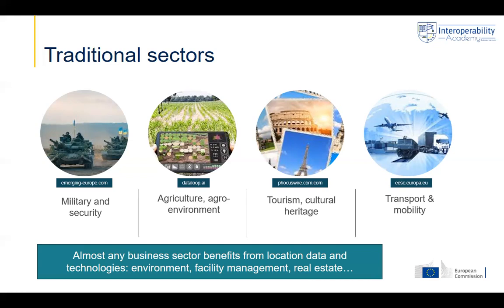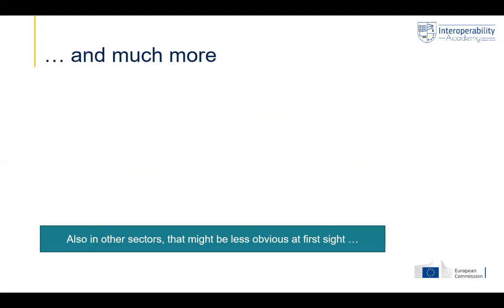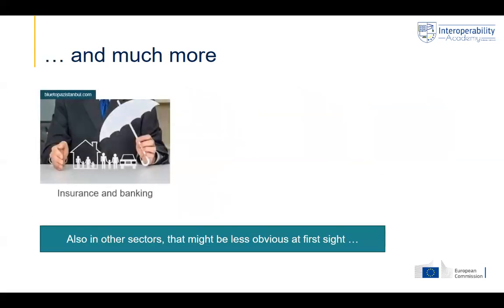These are typical traditional sectors. Real estate and facility management are other sectors where location data and technologies are used. But there are other sectors where it is used more recently or less intensely. Insurance and banking, for example — they might use it for finding the optimal location for a new bank office, but it can also be used for other aspects, as we will see in the case study later.